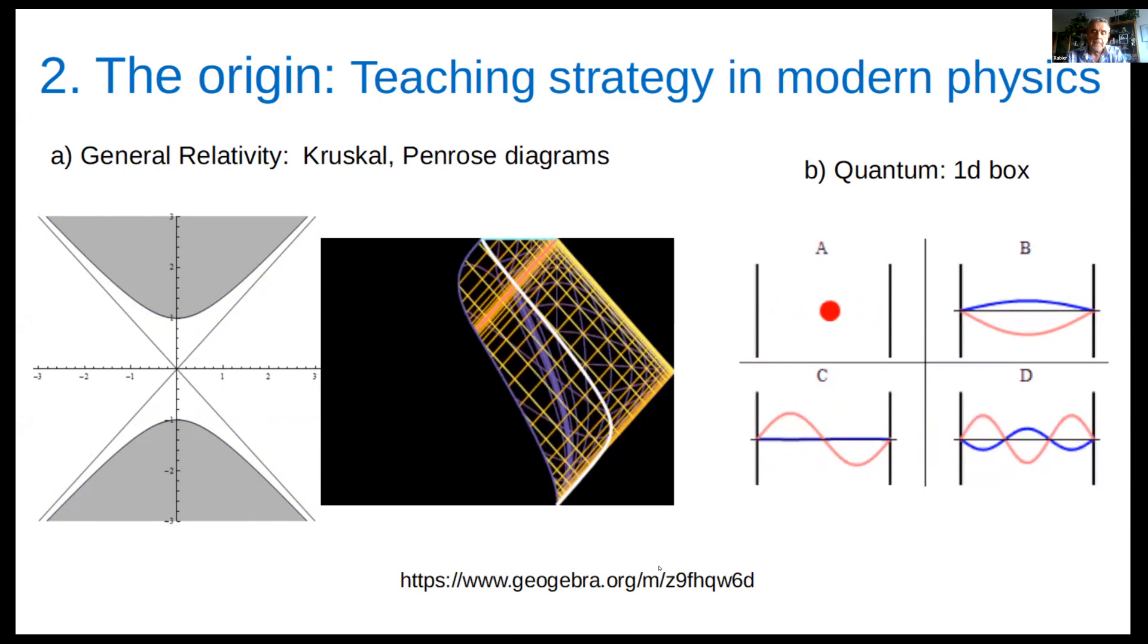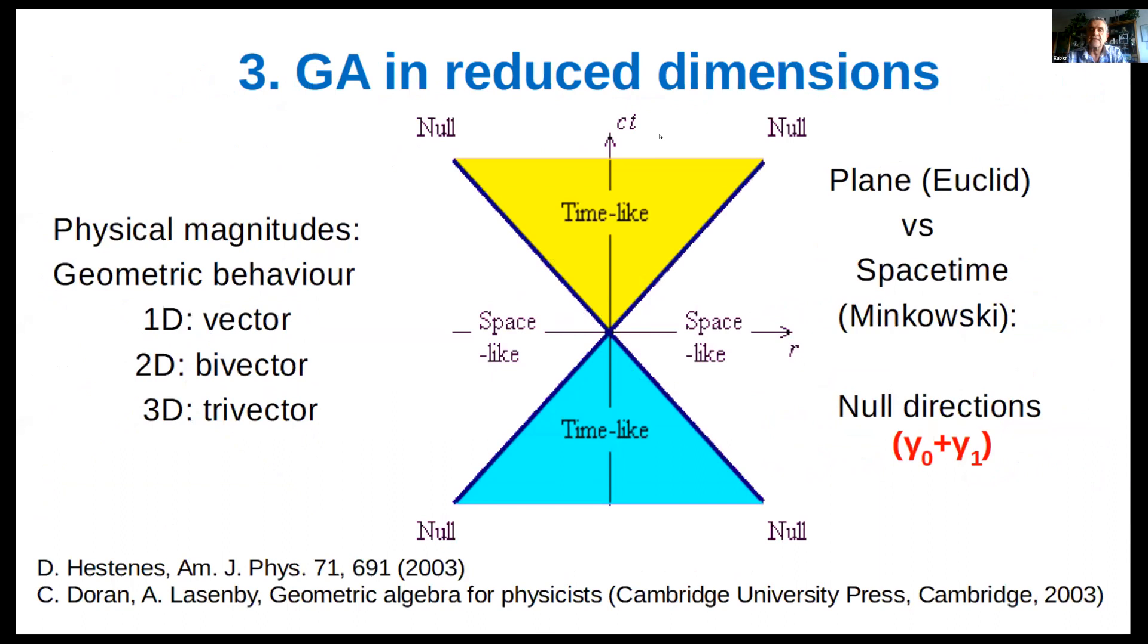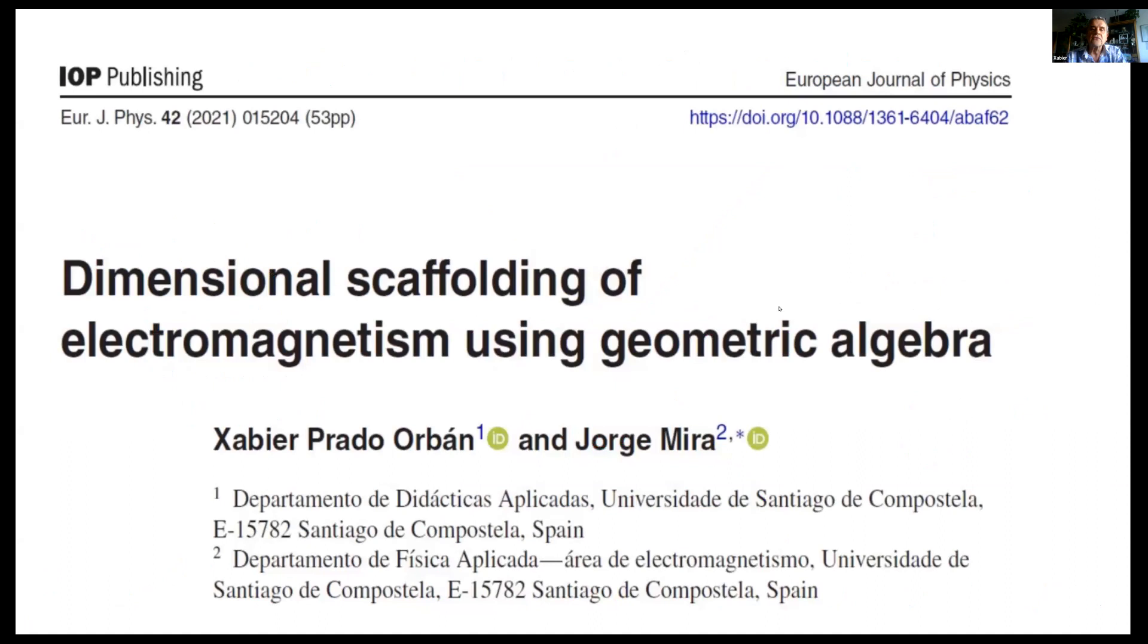We found that geometric algebra offers a perfect tool for dimensional scaffolding. Physical magnitudes become multivectors inheriting their geometric properties. The same equations are valid in different dimensions, depending on the types and grades of the multivector quantities. Translation between space and spacetime is straightforward.